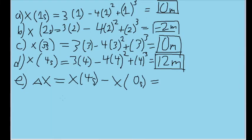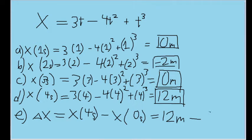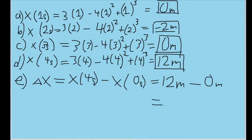Here I have set up that expression using delta X to represent displacement, as the position at four seconds minus the position at zero seconds. We've already found that the position at four seconds is 12 meters, and we're subtracting the position at zero seconds, which is zero meters. So 12 minus zero gives us a displacement of 12 meters.